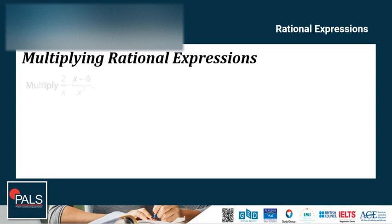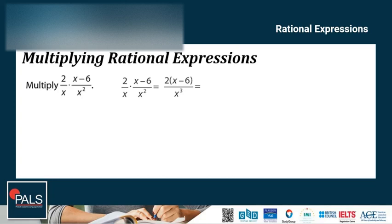Let's see it using an example. Multiply 2 over x, times x minus 6 over x squared. Multiplying across, we have 2 times x minus 6 over x cubed, because x times x squared is x cubed. The final answer is 2x minus 12 over x cubed. Multiplying rational expressions is not as complicated as adding and subtracting unlike denominators.